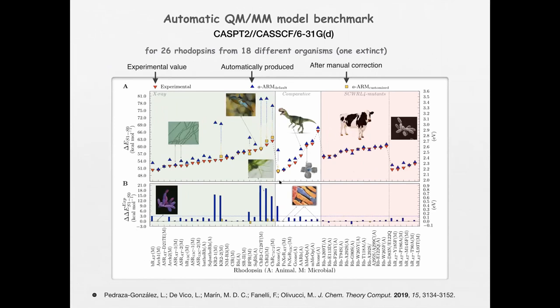Most recently we also implemented a further phase in the protocol that generates equilibrium structures in the excited state, so we can compute both absorption and fluorescence. As for performance, from the vertical excitation energy calculations for 26 different rhodopsins from 18 different organisms — which absorb different wavelengths — the measured absorption is pretty much reproduced from a trend point of view. This holds for structures from X-ray crystallography, from comparative/homology modeling, and the code also has a module to perform mutations in the protein.